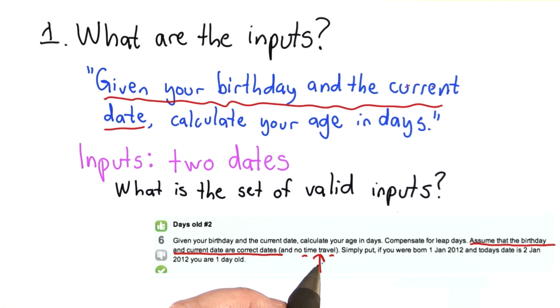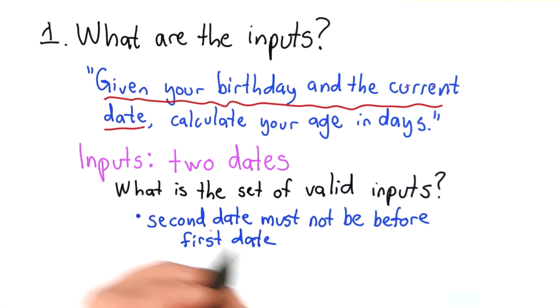I like the way Mateus stated this as no time travel. For a program specification, we probably want to be a little more precise, and just state simply, the second date must not be before the first date.